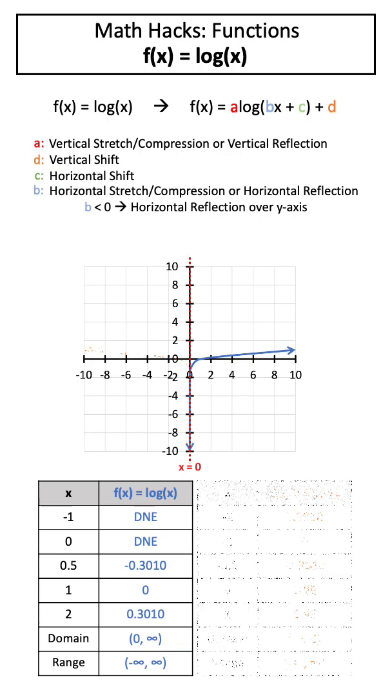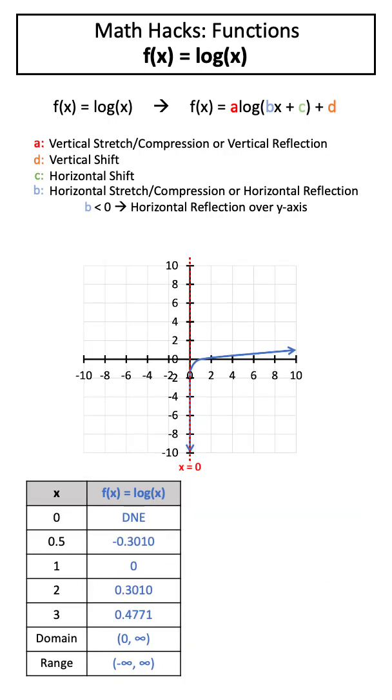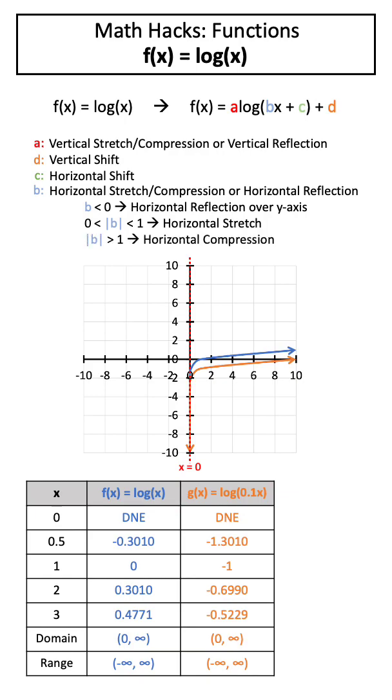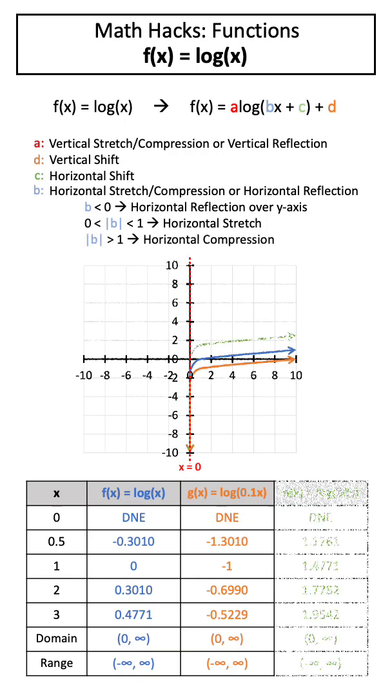If b is less than 0, this will reflect our function over the y-axis. If the absolute value of b is between 0 and 1, this will horizontally stretch our function, whereas if the absolute value of b is greater than 1, this will horizontally compress our function.